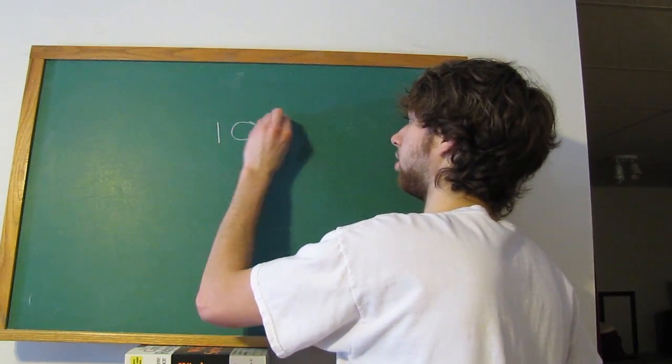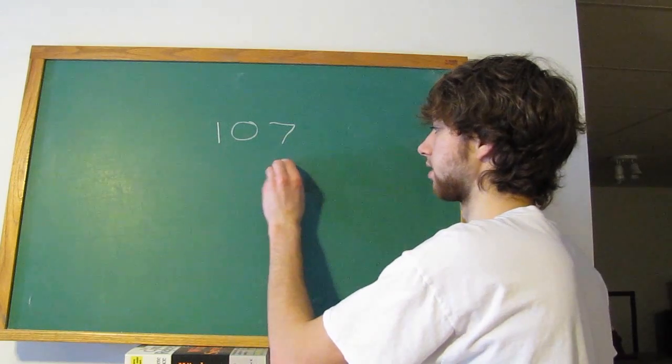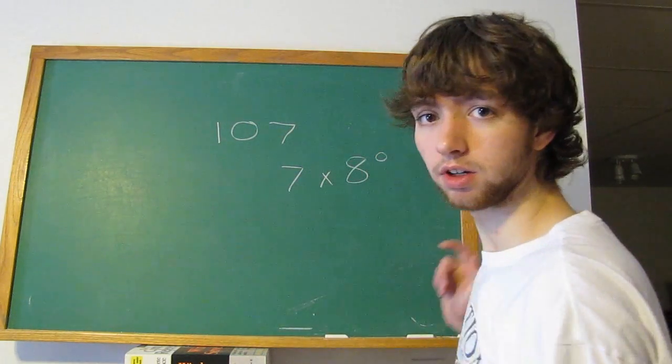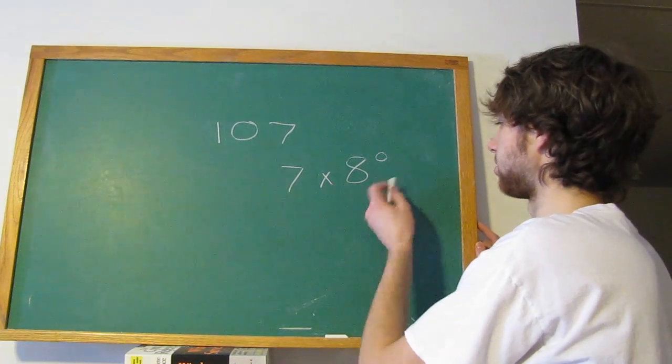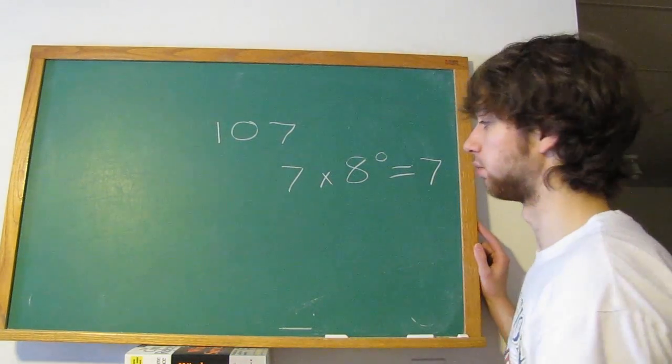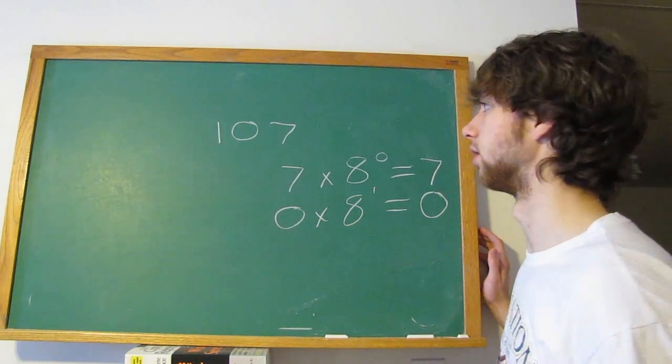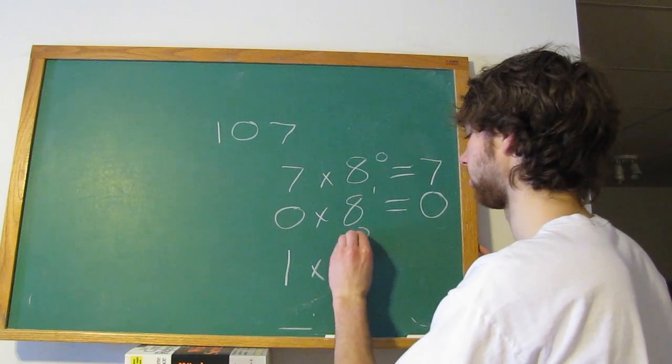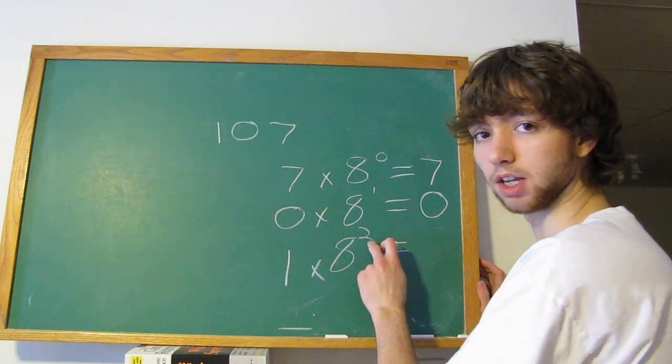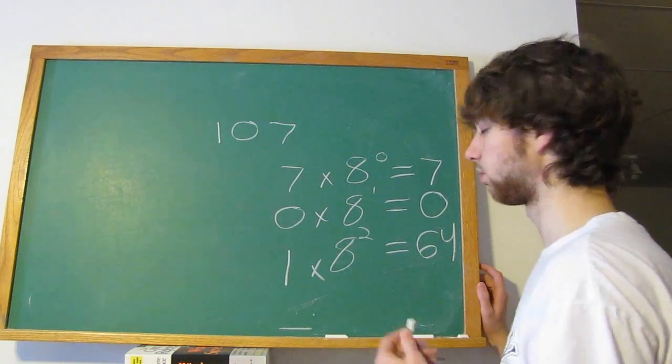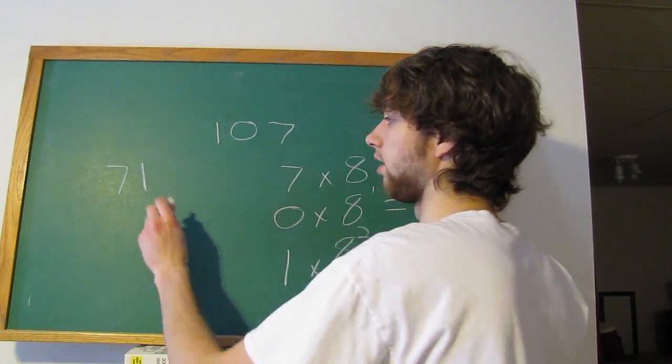So for example, if we have 107, we can figure out what it is in decimal by using conversion. So basically we take 7 times 8 to the 0th power. And basically this is saying we're in base 8, and we're not to the 10th place, so it's at 0. So 7 times 8 to the 0 is going to be 7. Pretty simple. 0 times 8 to the 1st power is going to be 0, because anything times 0 is 0. Next we have 1 times 8 to the 2nd power equals question mark. Well, 1 times anything is itself, so 8 to the 2nd power is 8 times 8, or 64. So we add these together and we get 71.